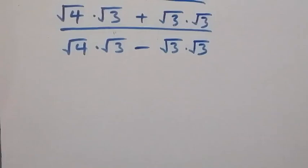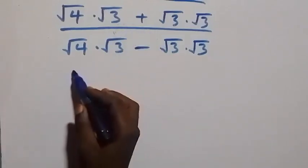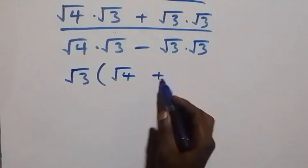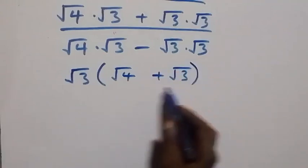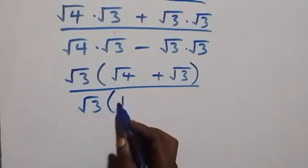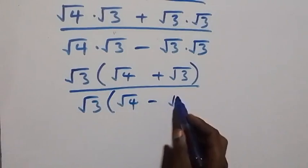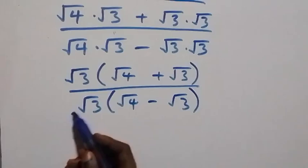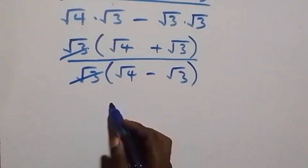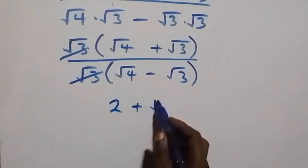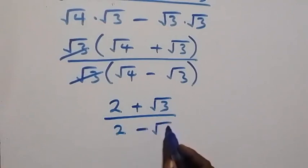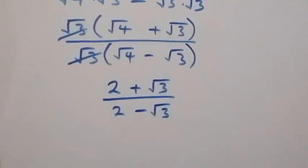From here, root(3) is common in the numerator, so we have root(3) into bracket root(4) plus root(3). And root(3) is also common in the denominator, so we have root(3) into bracket root(4) minus root(3). Root(3) cancels each other, and what we have is (2 + √3) over (2 - √3). We can rationalize this.